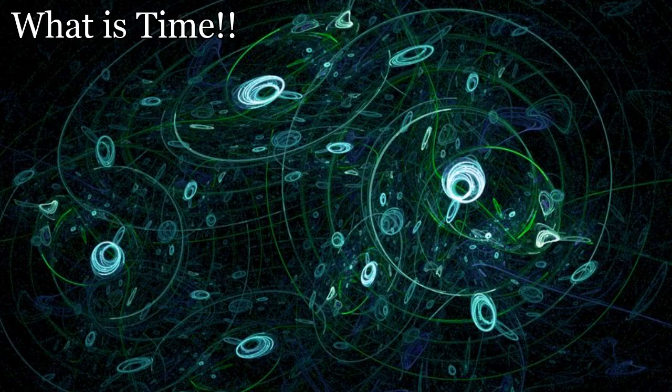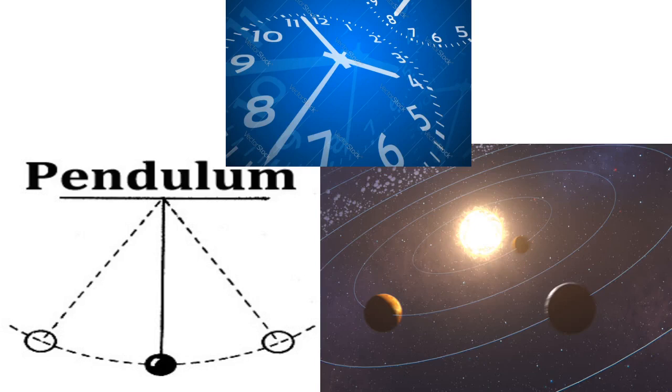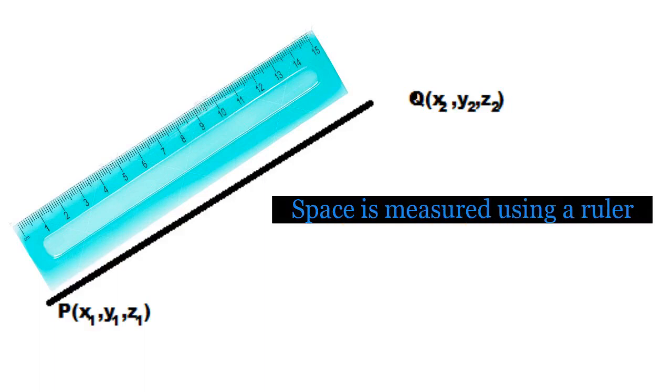Time, on the other hand, is defined by change. Time interval is measured by continuous repetitive motions. Clocks, the oscillatory pendulum, the revolving planets are means of measurement of time. Space is measured using a ruler. Two points in space are defined to be at a given distance or length from each other and can be measured by ruler.